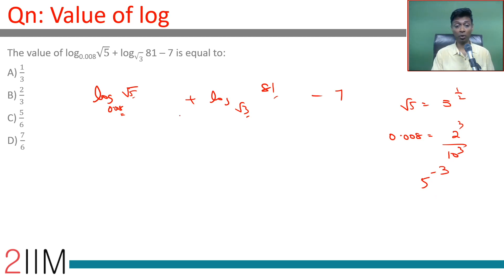I'm going to write this as log root 5 by log 0.008, write this as log 81 by log root 3. Choose this base to be 5, this base to be 3, minus 7.